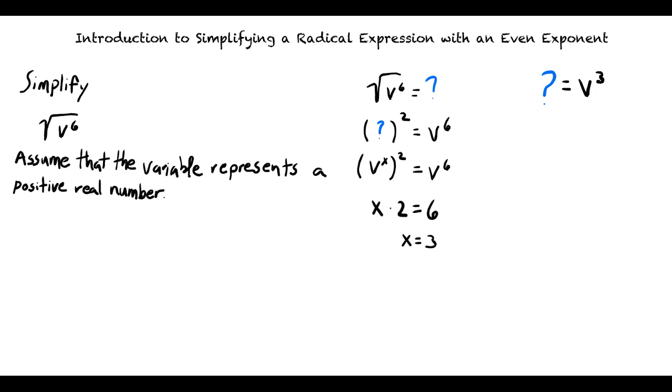When simplifying a radical expression with even exponents, it's important to remember that with an even exponent, we will always get two answers to our radical expression. To simplify a radical expression, we want to find the term that when squared, it equals the term inside the radical sign.